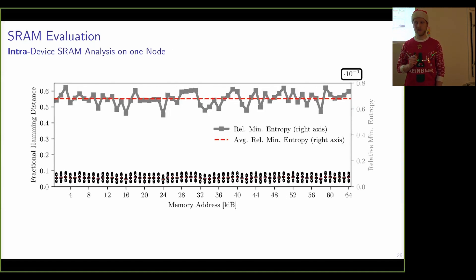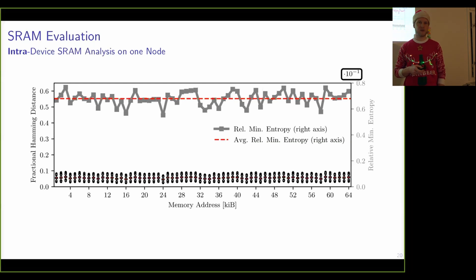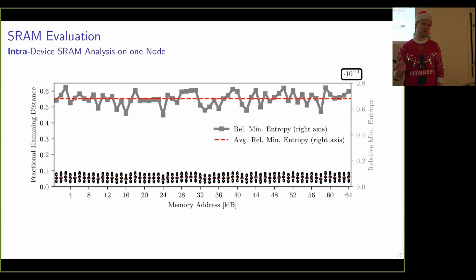Looking at variations on a single device between reboots — the basis for randomness generation — the Hamming distance operates at a scale of 0.05 or 5%, reflecting the random noise induced by fluctuating cells. The other 95% reflects the device-unique pattern. Consequently, the minimum entropy between device reboots reduces by one order of magnitude compared to the inter-device case. Still, if we can extract this proportion of fluctuations, we have a source of true randomness, whereas correcting these bit flips is required to make the PUF response reproducible.